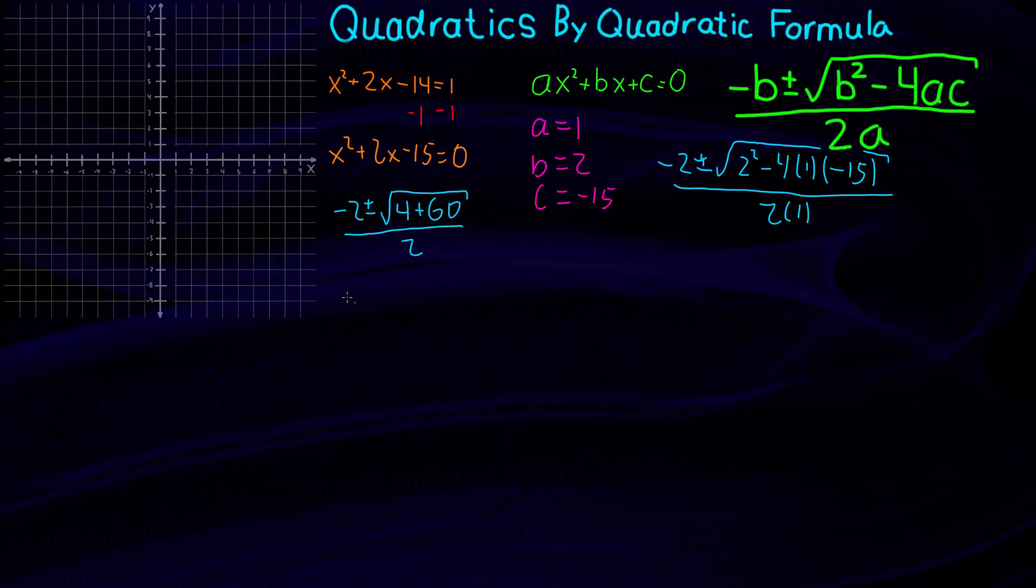We can go further with this. Negative 2 plus or minus the square root of 64 divided by 2. Negative 2 plus or minus, let's see. Square root of 64 should be 8. Let me double check with my calculator but it should be right. 8 times 8 is 64.